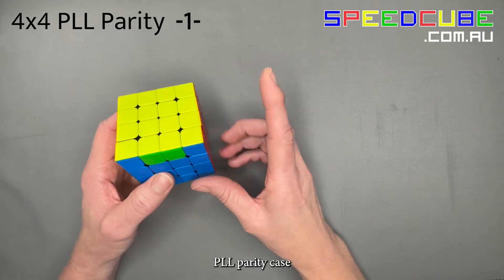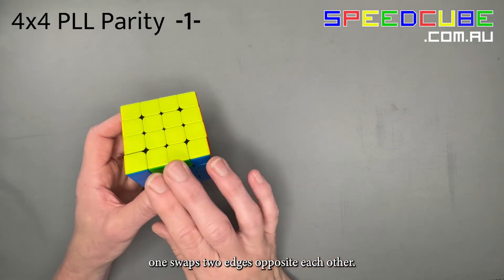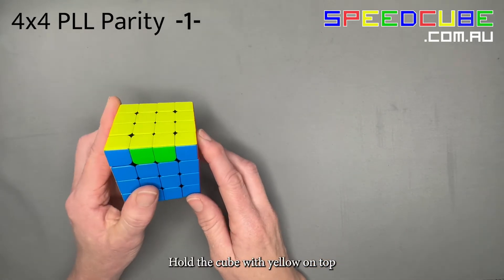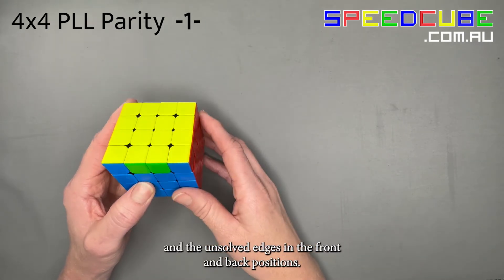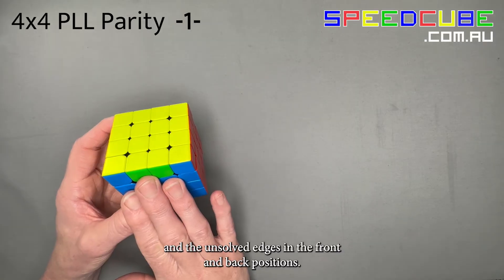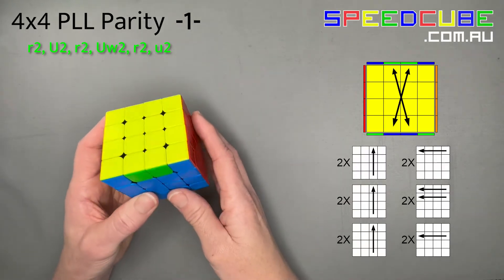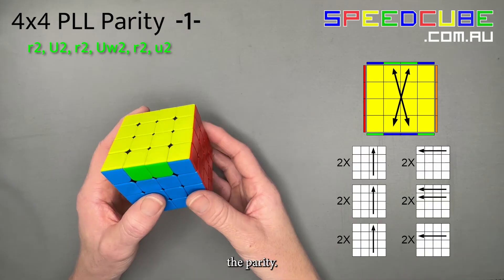PLL parity case 1 swaps two edges opposite each other. Hold the cube with yellow on top and the unsolved edges in the front and back positions. Perform these steps to solve the parity.